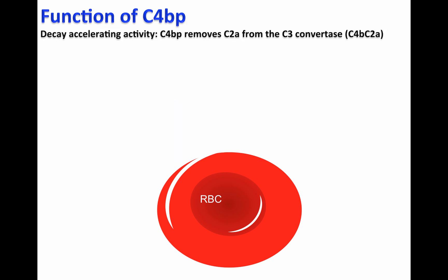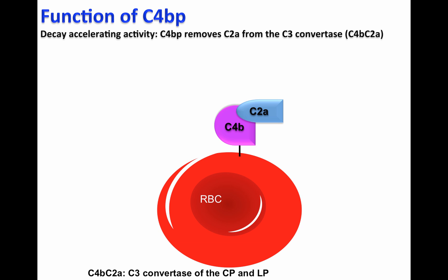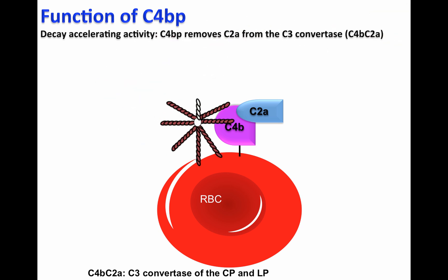C4BP has also another function called decay-accelerating activity. If the C3 convertase of the classical and lectin pathways forms C4B-C2A on the cell surface of red blood cells, C4BP will recognize the C3 convertase, and it will displace or remove C2A from the C3 convertase.